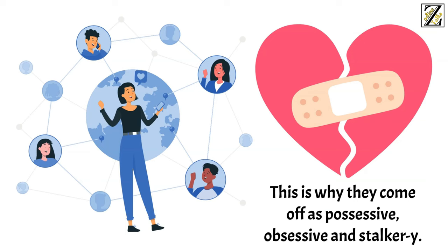This is why they come off as possessive, obsessive, and stalker-y. They sometimes have to be 10 steps in front of everyone in order for them to be able to relax, even a little bit.